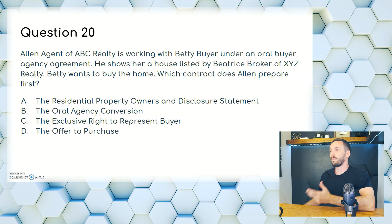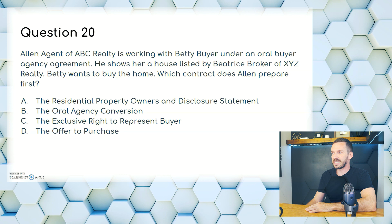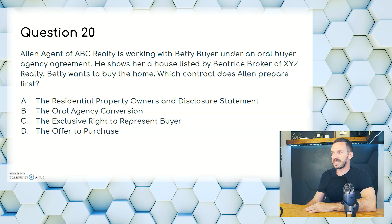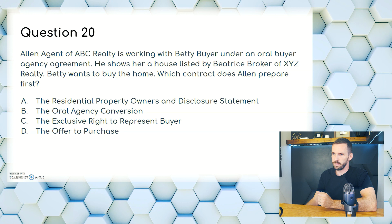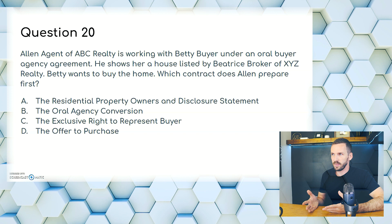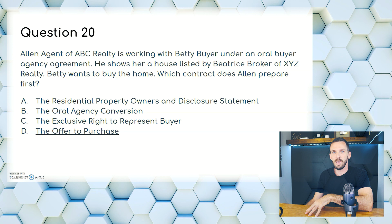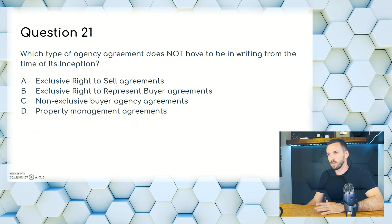Question 20. Alan, agent of ABC Realty, is working with Betty Beyer under an oral buyer agency agreement. He shows her a house listed by Beatrice Broker of XYZ Realty. Betty wants to buy the home. Which contract does Alan prepare first? A, the RPOD; B, the oral agency conversion; C, the exclusive right to represent the buyer; or D, the offer to purchase. You want to get the offer out right away. The answer is D — the offer to purchase.